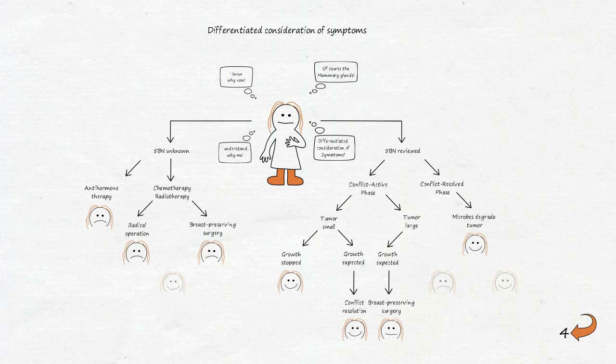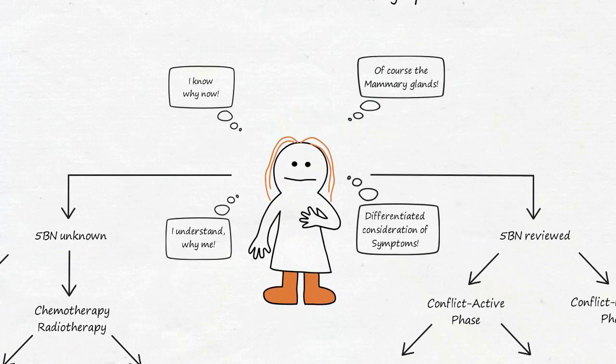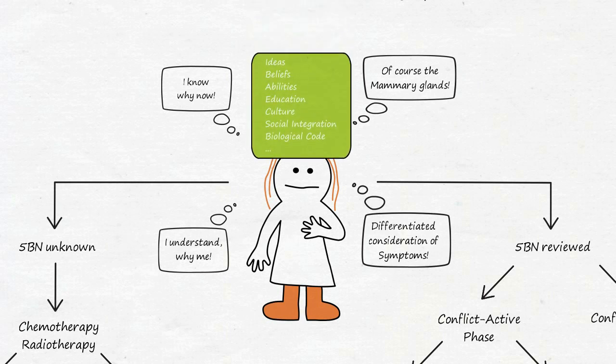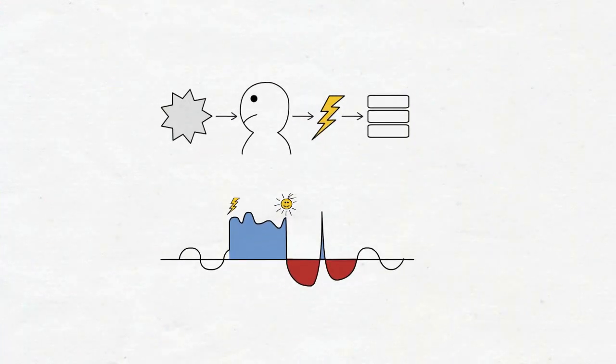Even if the objective criteria were pushed to the foreground in these examples, in reality, the concrete treatment possibilities must always take into account personal individual framework conditions, as these led to the start of the SBS, but also contain the necessary options to resolve the conflict, or to guide the controlled passage of the SBS. With the knowledge of the first and second biological laws of nature, we can now precisely recognize the cause, the course, and the rhythm of an SBS. But how do we know which symptoms occur in the conflict active phase and in the conflict resolve phase?